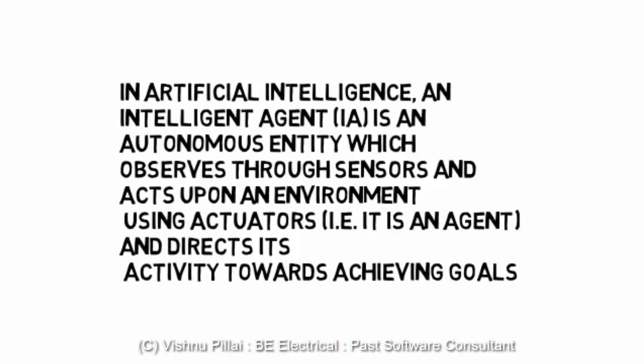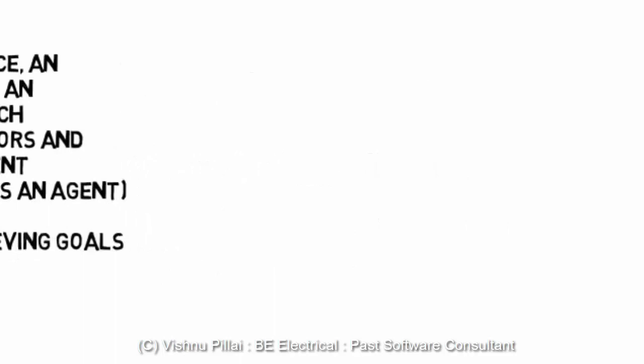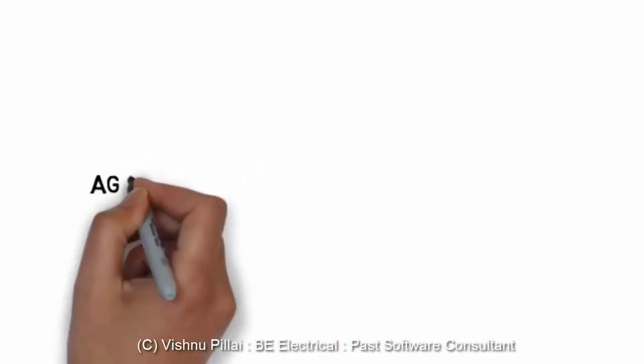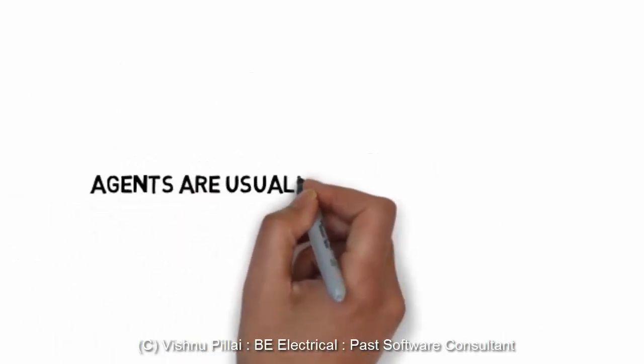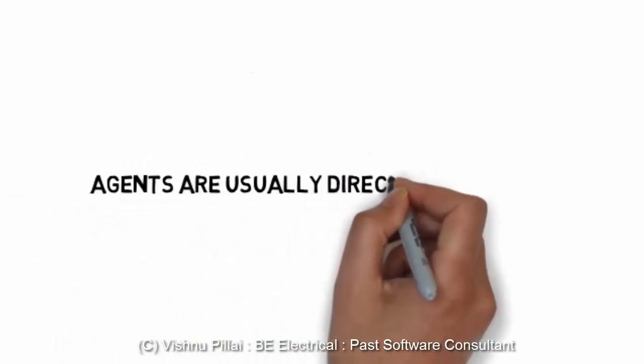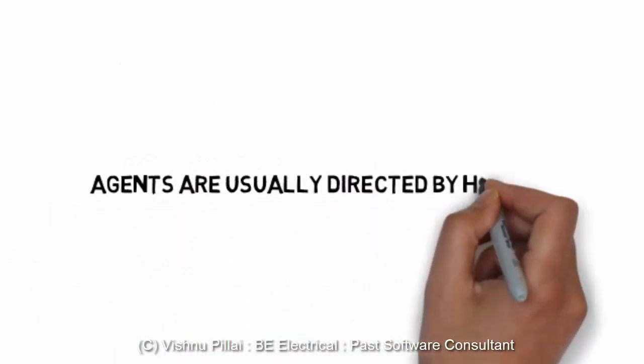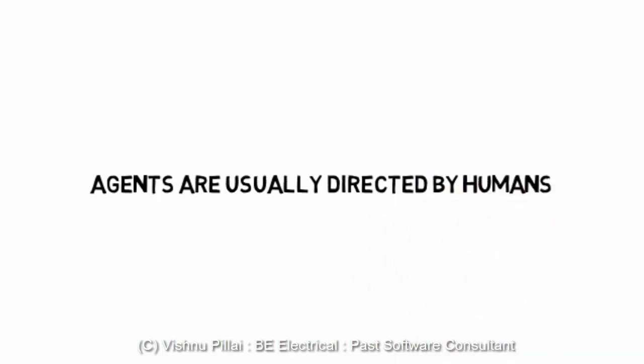The primary function of an agent is to achieve a goal, and it does so by getting information through sensors and acting based on that information. An agent is very similar to how a human would act in a specific situation, and agents are usually directed by humans, meaning they are controlled.